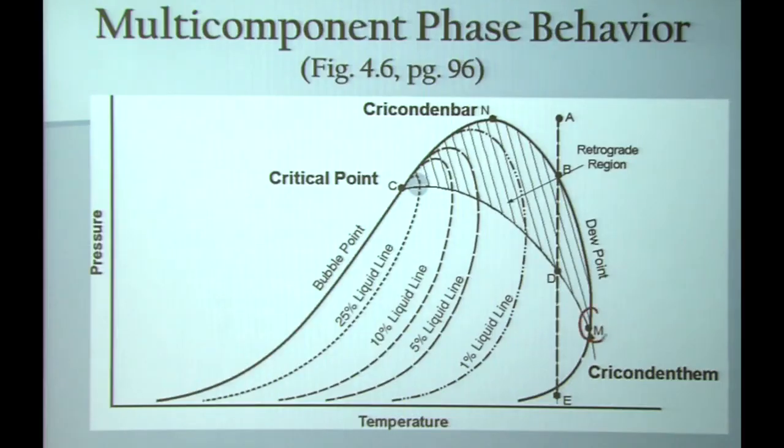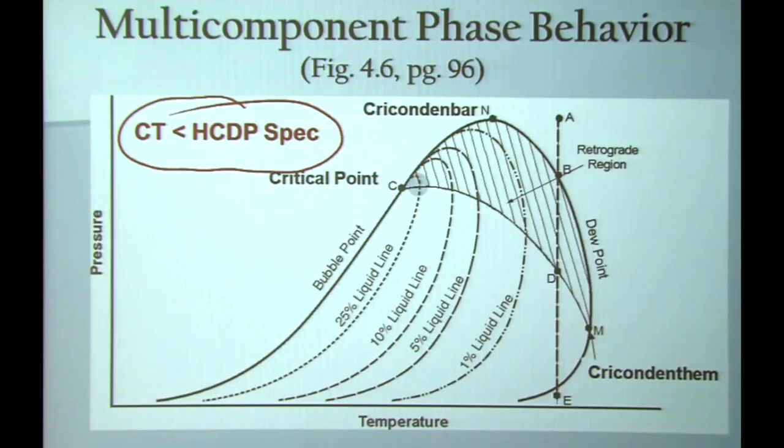Another item that is important to understand on the phase envelope is this cricondentherm. Very often, we specify hydrocarbon dew point specifications as a temperature spec only. So for instance, if my hydrocarbon dew point spec in this particular example happened to be minus 3 degrees, that would be what is called a cricondentherm specification since no pressure is given. That's the point where the vertical tangent hits the temperature line. That's one common method of specifying the dew point requirement of a gas. So the cricondentherm needs to be less than the hydrocarbon dew point specification.